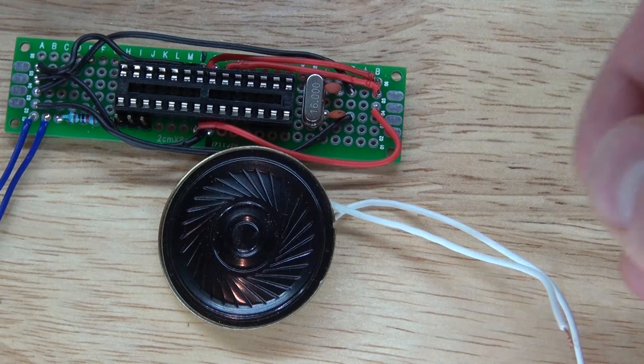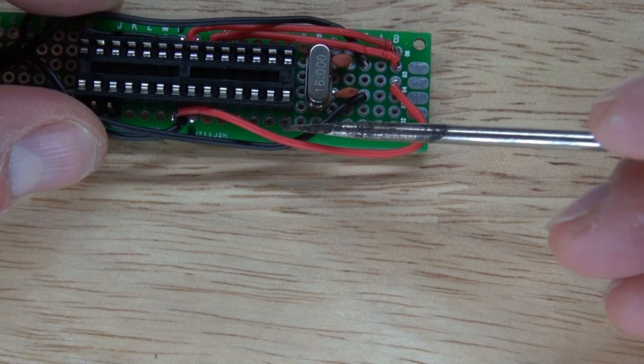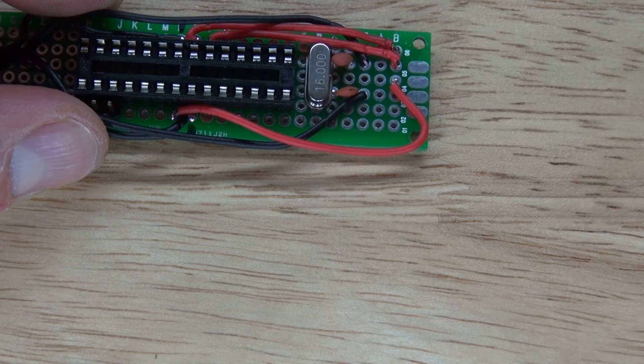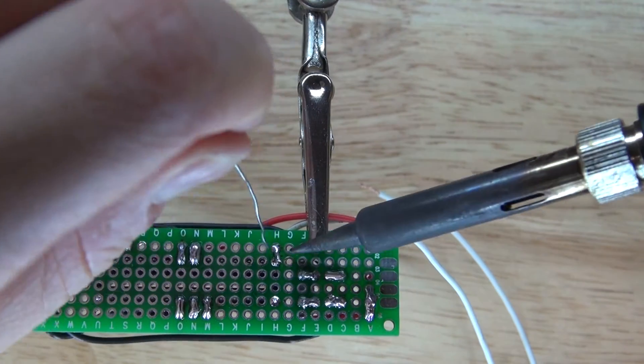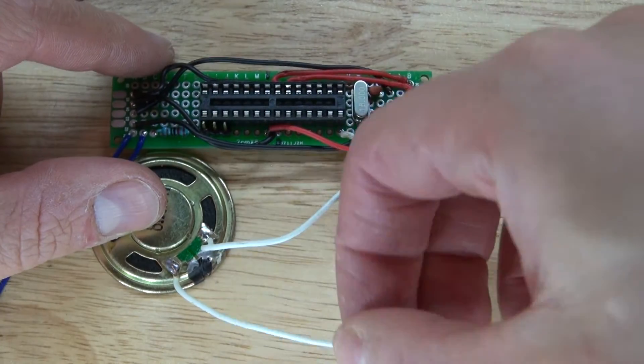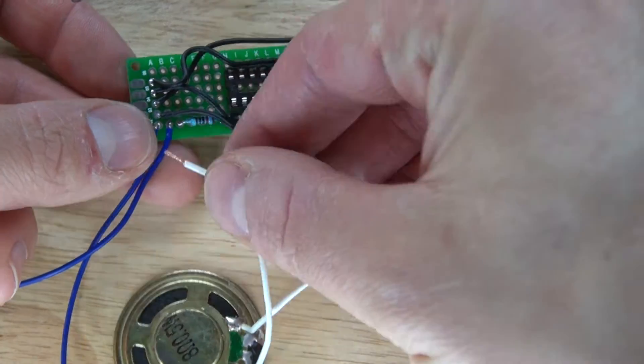And now it's time to connect the speaker to the circuit. What I'm going to do is connect the speaker to pin 14 and then the other wire of the speaker to ground. Pin 14 is now soldered to the speaker. And now it's time to connect speaker to ground.